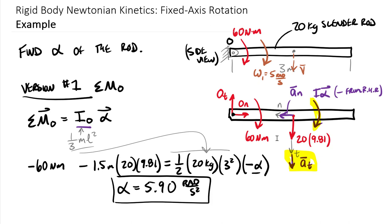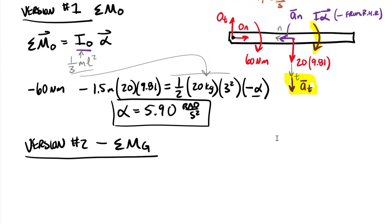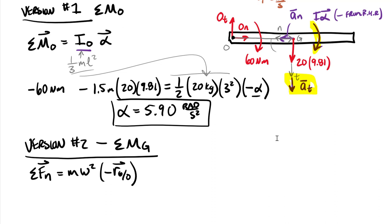That was the fastest of the two versions. Version 2: we sum moments about the centroid, point G. This exposes additional unknowns — O sub T and O sub N — so use this method when asked to solve for pin forces. First, summing forces in the normal direction equals mass times omega squared times the negative of R of G relative to O. That position vector goes from O out to G — a distance of 1.5 meters.